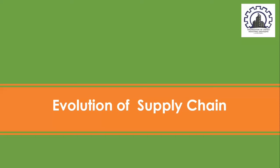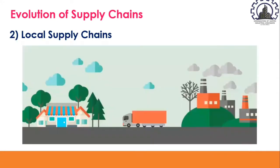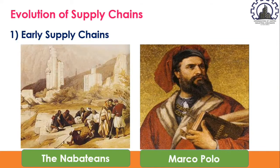The evolutions of supply chains are divided into three parts: first, early supply chains; second, local supply chains; and finally, global supply chains. Let us discuss them one by one, starting with early supply chains.